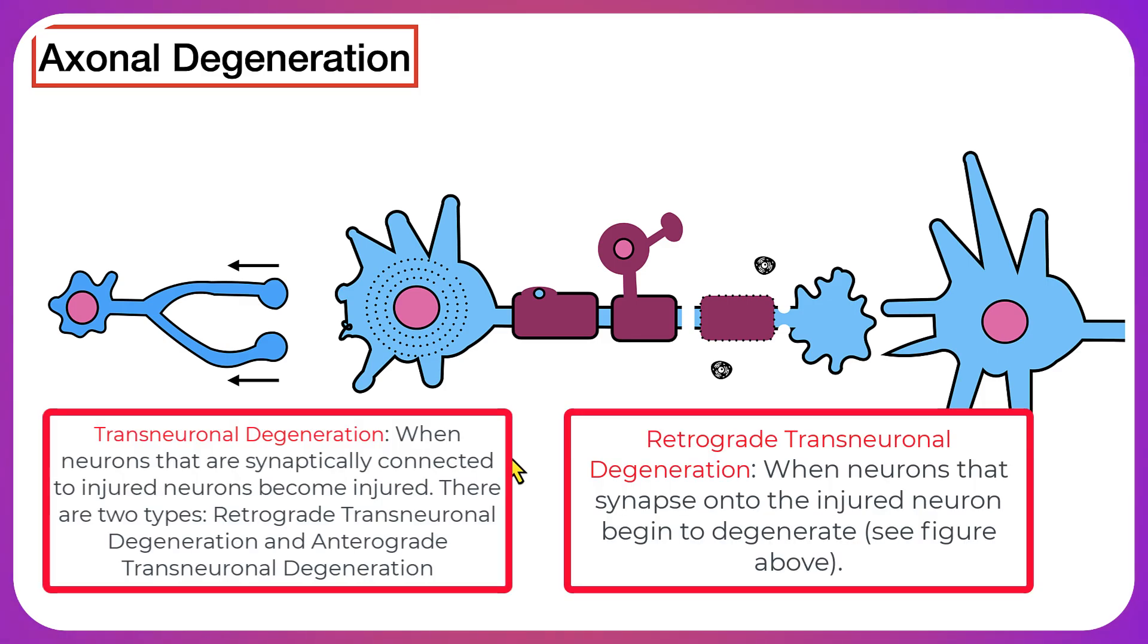The next thing that can happen is something called transneuronal degeneration, and there's two types. The first type is retrograde transneuronal degeneration. In retrograde transneuronal degeneration, neurons that are synapsed to the injured neuron can also be injured.